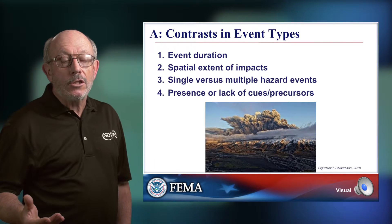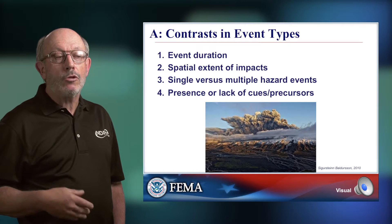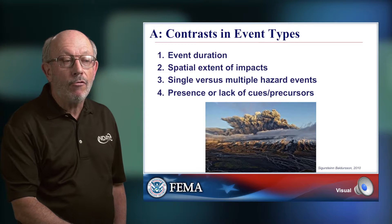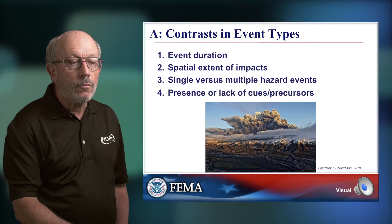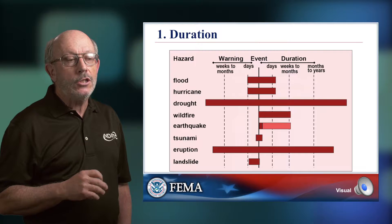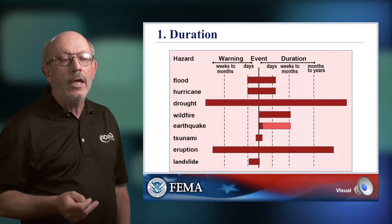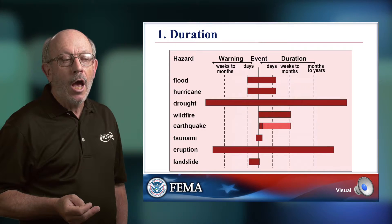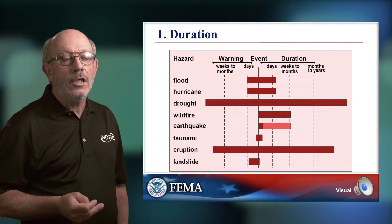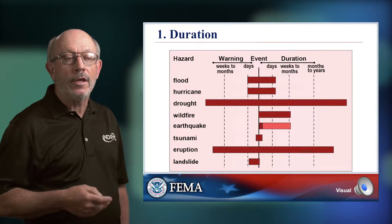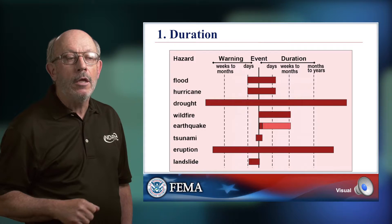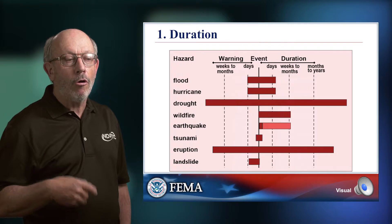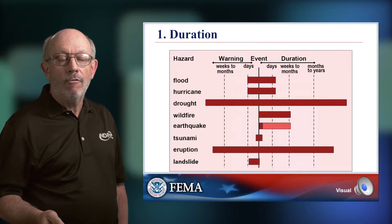Those contrasts in the context of naming — let's talk about them in four different ways, four different distinctions between hazard types. First: durations. This diagram shows two mirror images divided by a center line. To the left of the center line is the amount of warning time we have for an event; to the right is the actual duration of the event itself. Events are so different — such a contrast between tsunami and drought, for example.